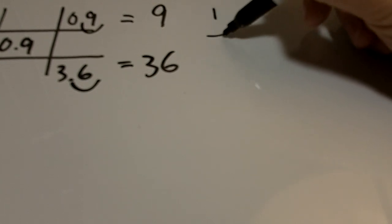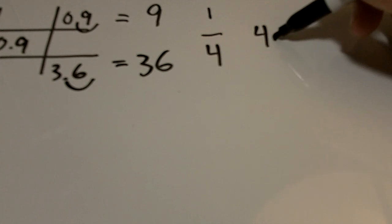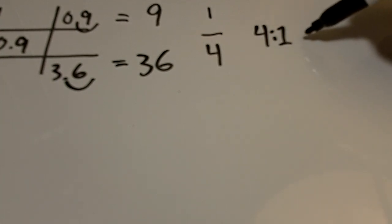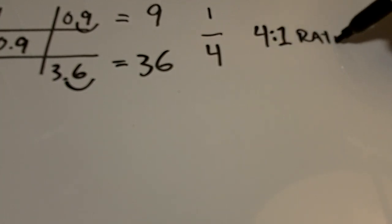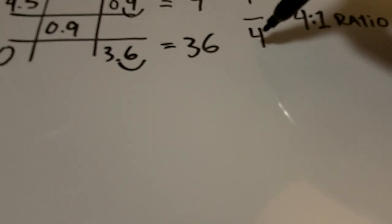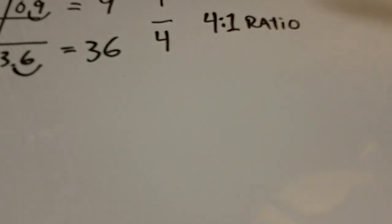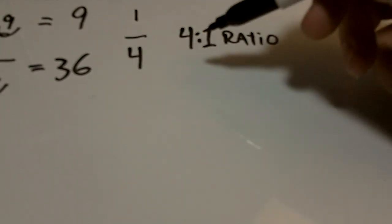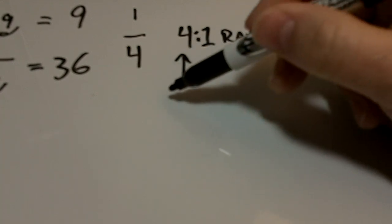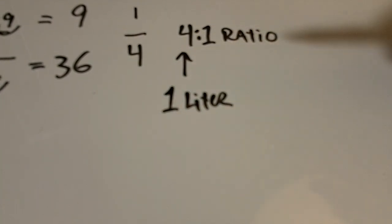Which is actually a pretty nice ratio because you can further squeeze that down to 1 to 4 which is a 4 to 1 ratio. And so what that means is that our 4 in the ratio is our water and our 1 is the 4.5% solution.